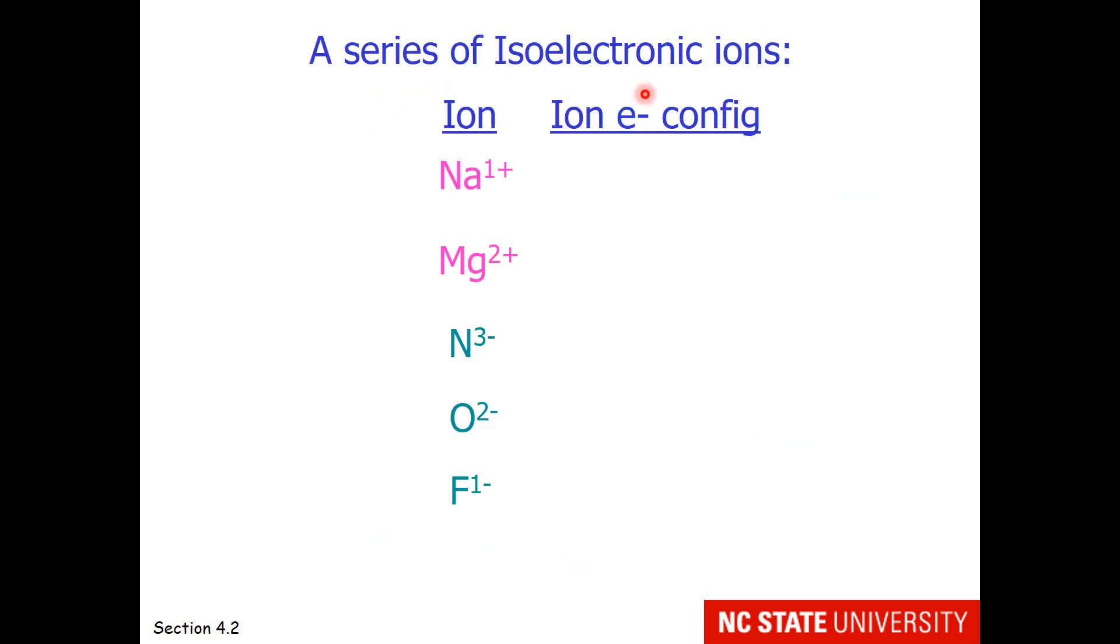Here is a series of isoelectronic ions. Sodium 1-plus has the ion-electron configuration of neon. And so does magnesium 2-plus. And so does nitrogen 3-minus, and oxygen 2-minus, and fluorine 1-minus.